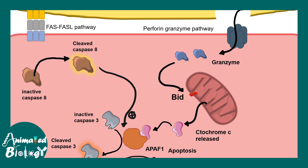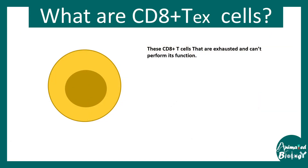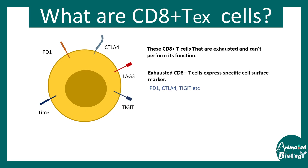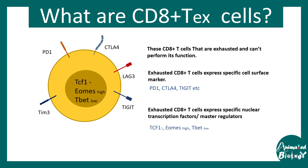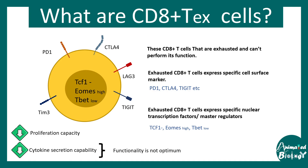Now let's talk about exhausted T cells. These are CD8 positive T cells that have all the surface marker signatures of CD8 positive T cells, but also unique signatures that make them different. Exhausted CD8 positive T cells express specific markers like PD-1, CTLA-4, and TIM-3. They are also identified by transcription factor levels — they are negative for TCF1, high in Eomes, and low in TOX. They lack proliferation capacity and the ability to secrete cytokines or kill cells, hence the name exhausted T cells.